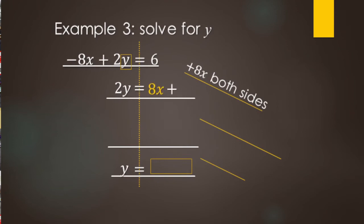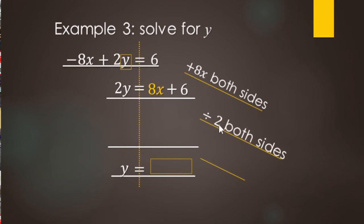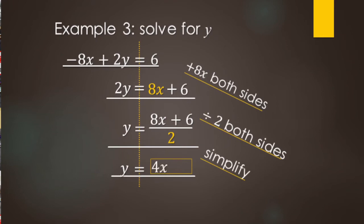Generally when writing expressions, variable terms go first. So we write 8X plus 6 rather than 6 plus 8X. Now we have 2 times Y, and we want just Y, so we undo the times 2 by dividing both sides by 2. We get 2Y divided by 2 equals Y, and 8X plus 6 divided by 2. Dividing both terms: 8 divided by 2 gives 4X, and 6 divided by 2 gives 3, so Y equals 4X plus 3.